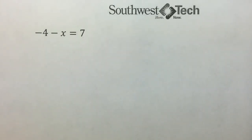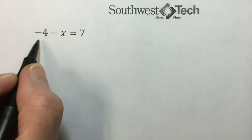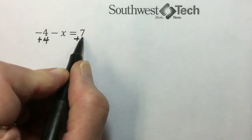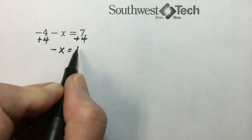In this next example, similar to what we've been doing, we will do our least priority, going backwards through the order of operations. So to eliminate a minus or negative 4, add 4 to both sides, leaving a negative x is equal to 11.